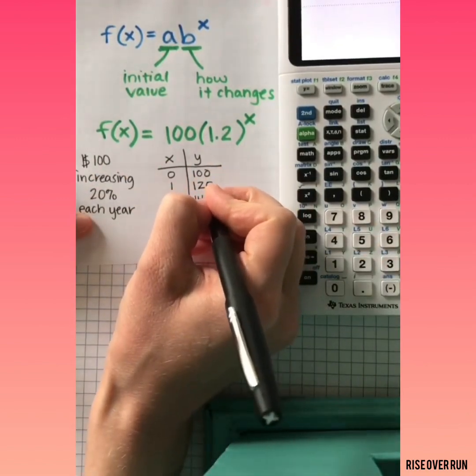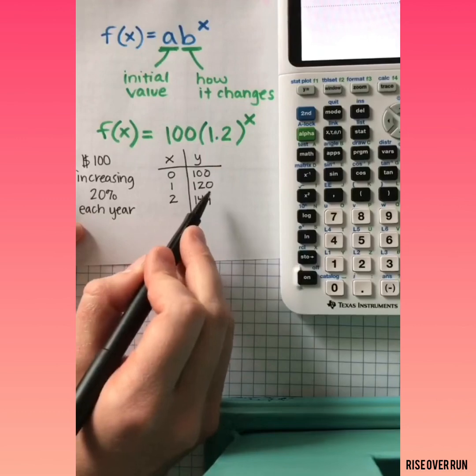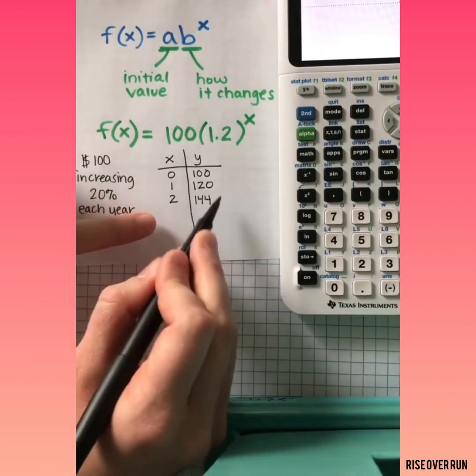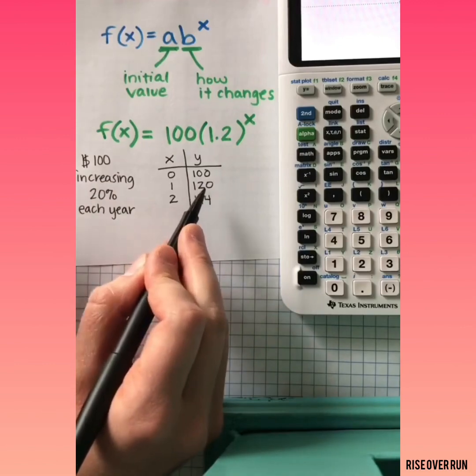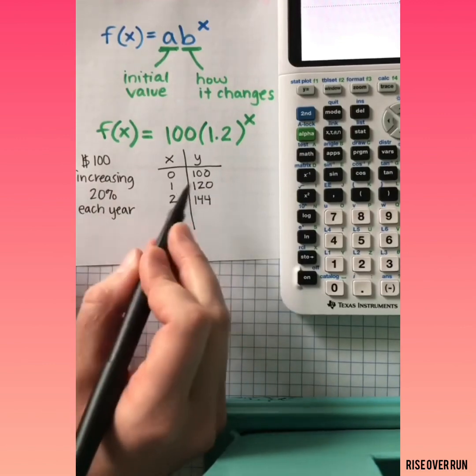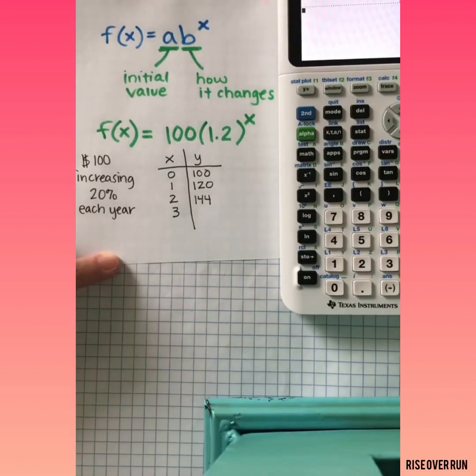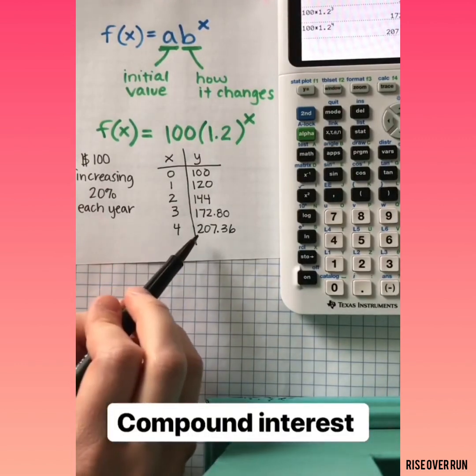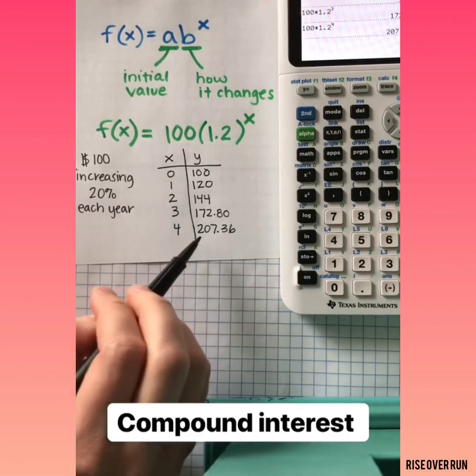$144. Notice it doesn't just increase by $20 every year. Because your investment is growing, you're going to gain that interest on what you've gotten the previous year. We can continue doing this to fill out this table. Here we can see how the money would grow and on the fourth year, you would have already doubled your money.